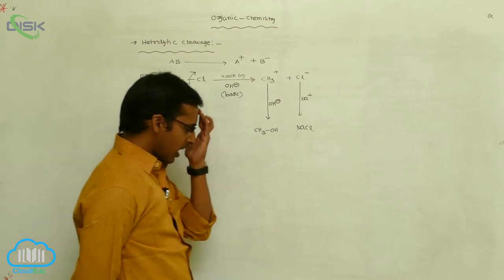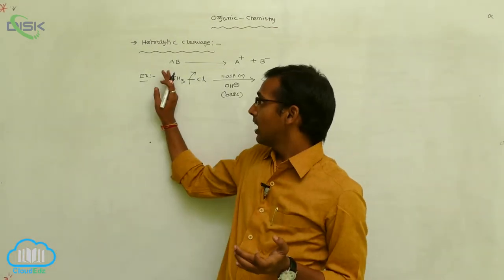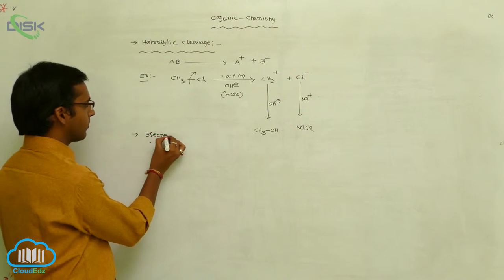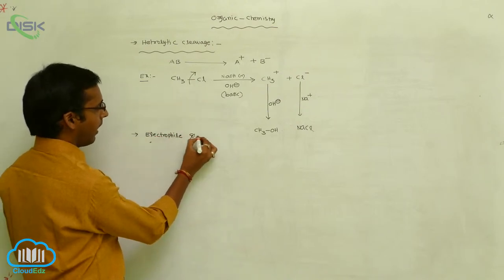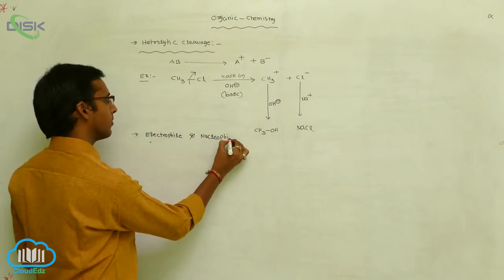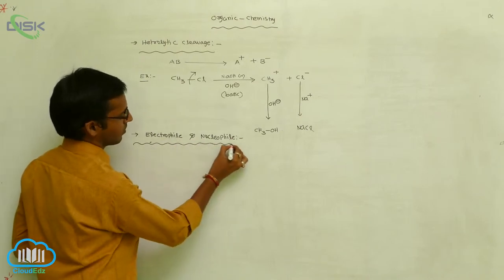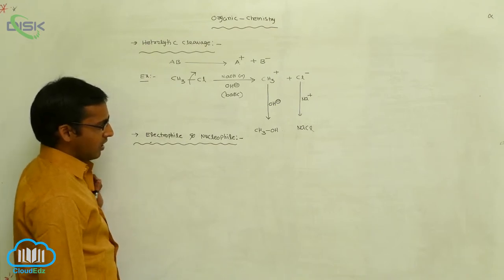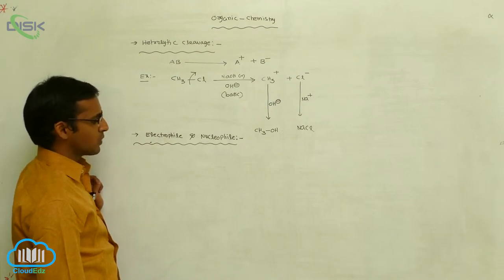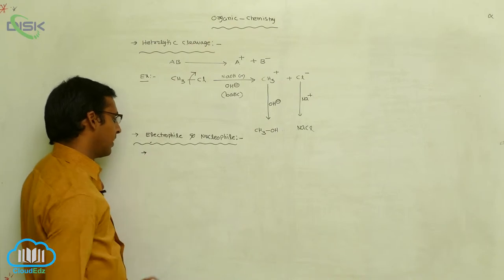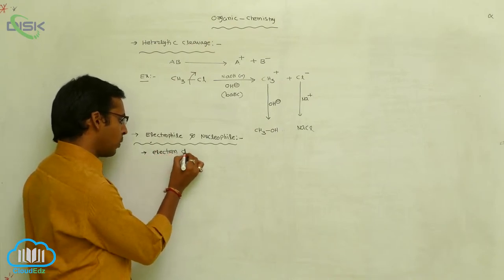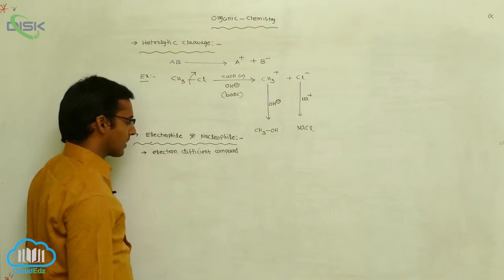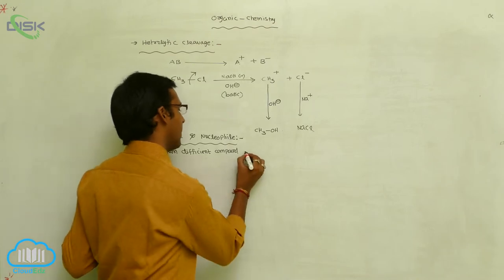This is our reaction mechanism involved in organic chemistry. The next topic is electrophile and nucleophile. These are your reagents — electrophilic reagent and nucleophilic reagent. An electrophile is an electron-deficient compound.